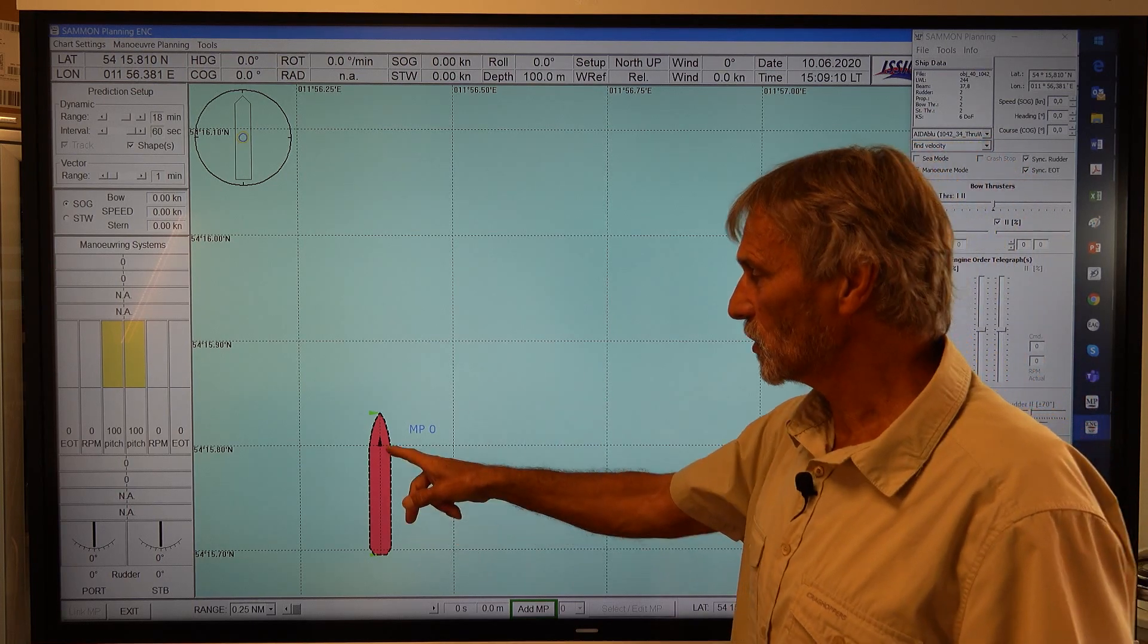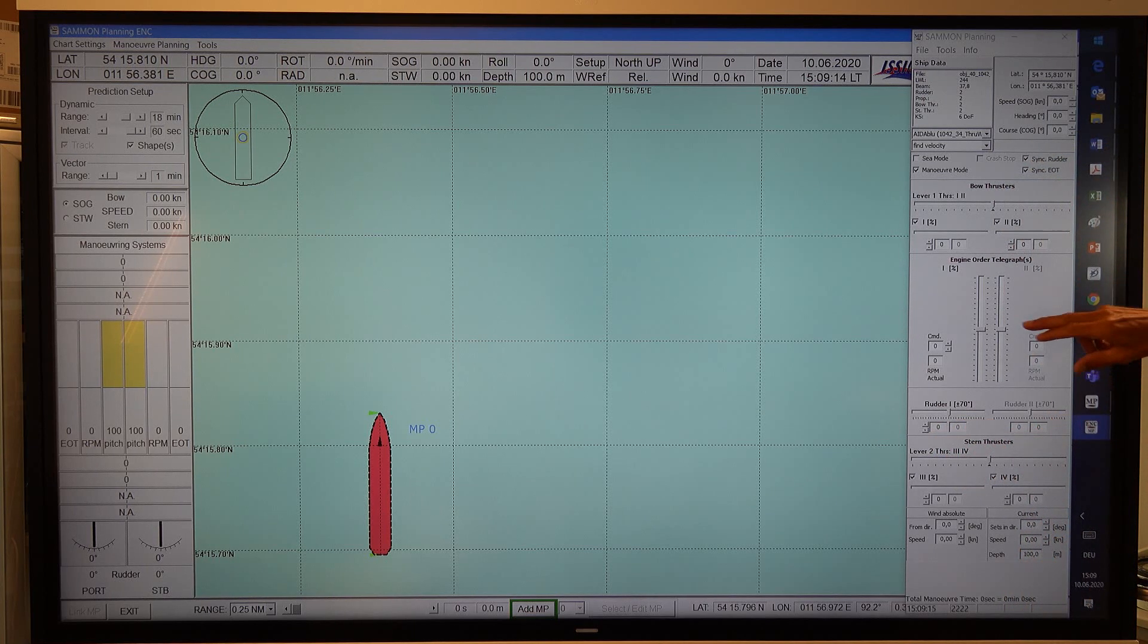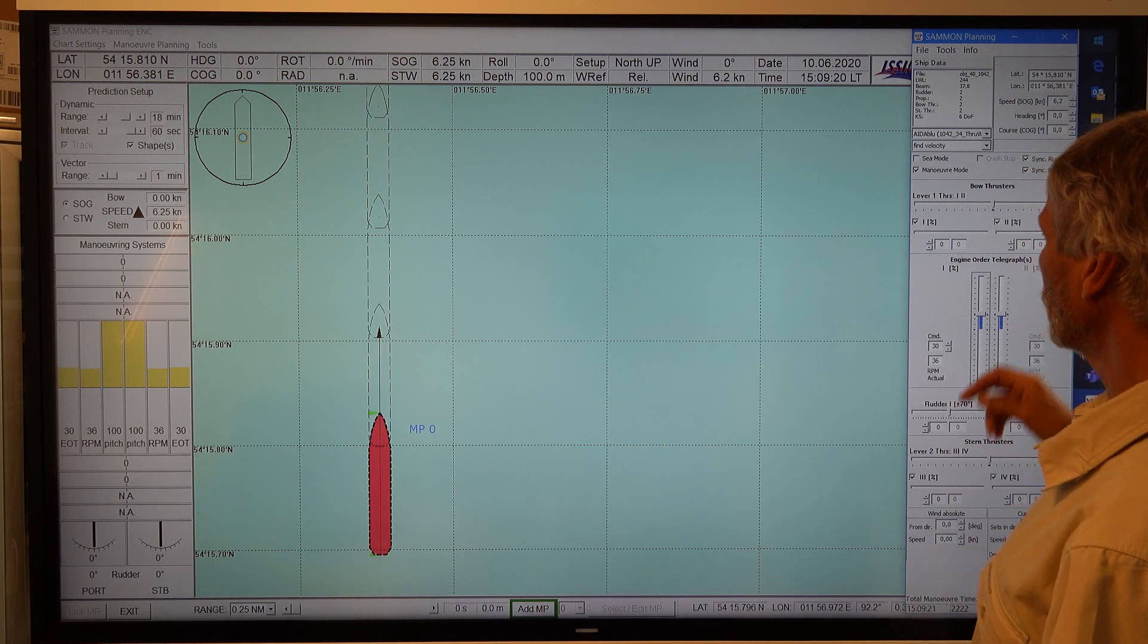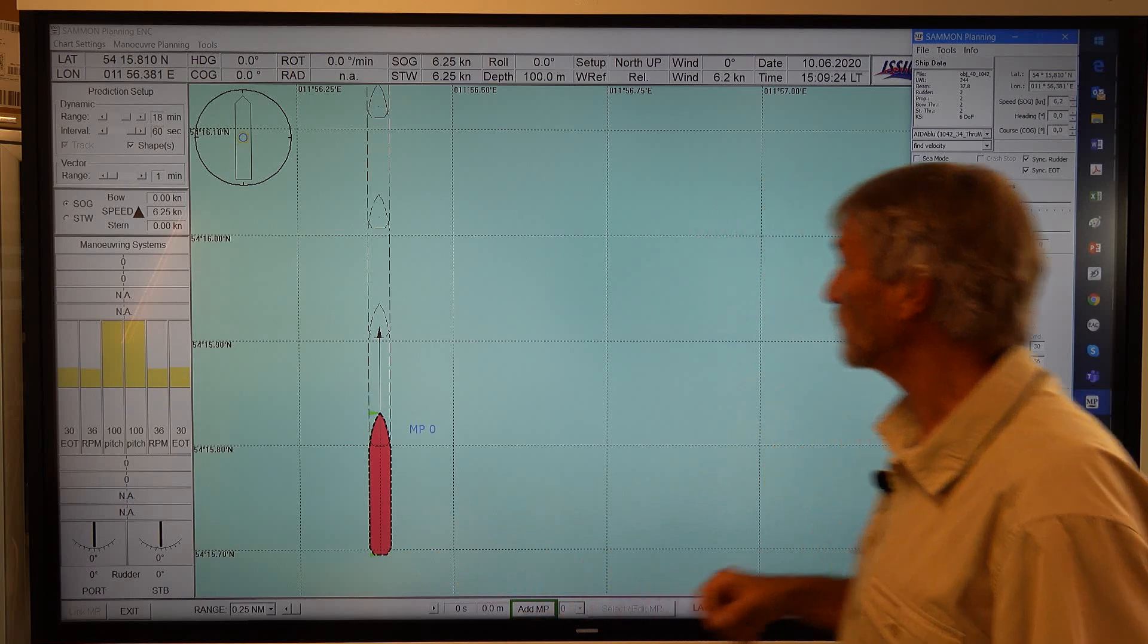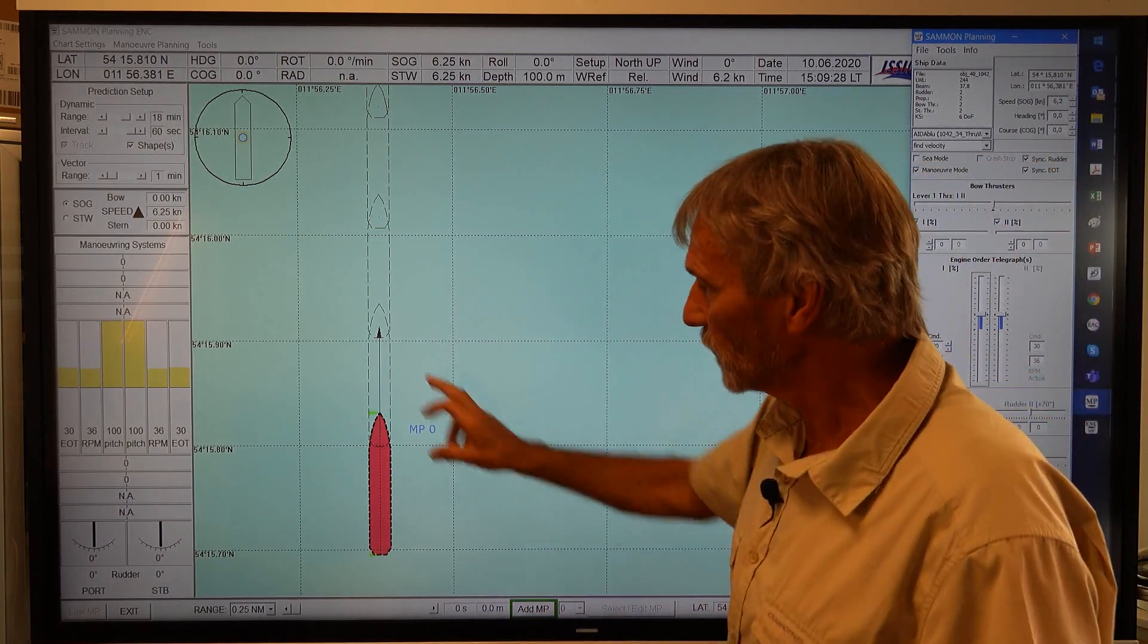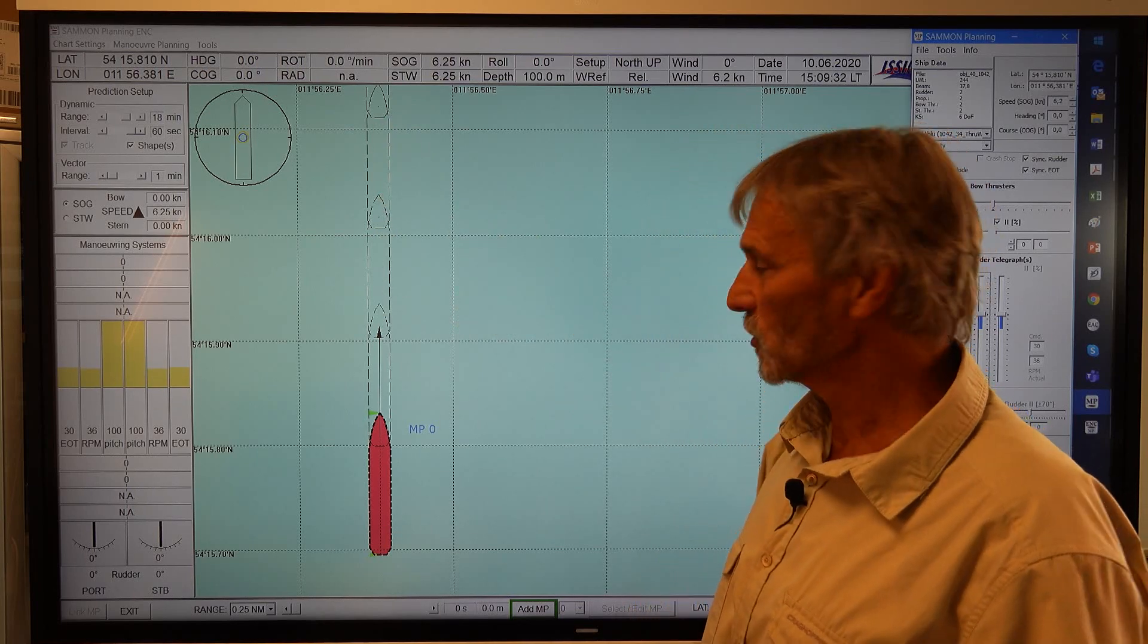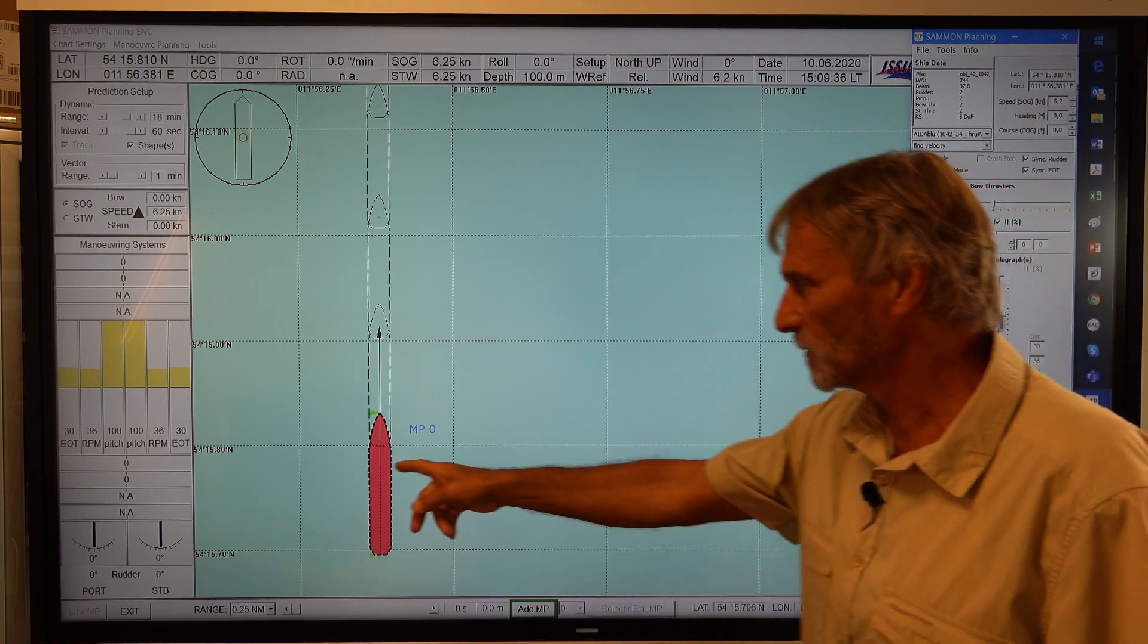So we start here with a ship. For the time being it's idle so we first increase the engines up to 30% ahead. The ship is starting already with the initial speed here with 6.2 knots and these are the shapes indicating the ship positions every minute ahead of this position.